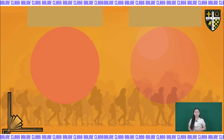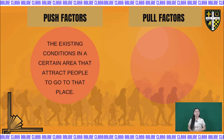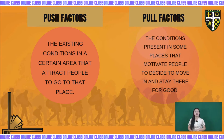The factors that influence migration are: number one, push factors, and number two, pull factors. Push factors are the existing conditions in a certain area that cause people to leave that place. Pull factors are the conditions present in some places that motivate people to decide to move in and stay there.